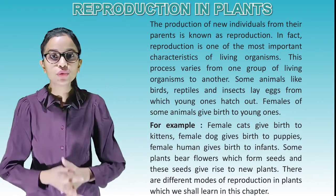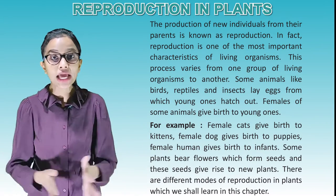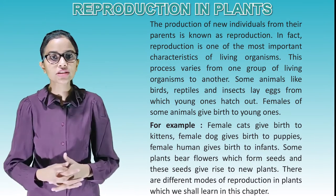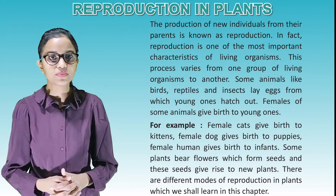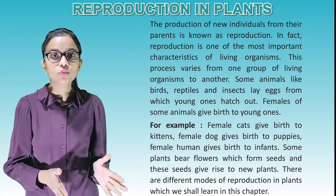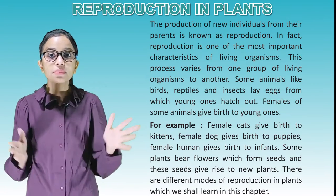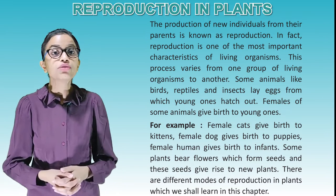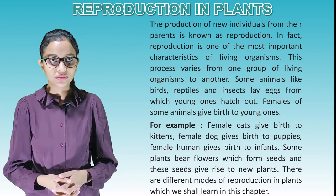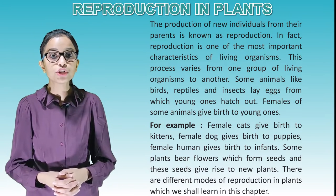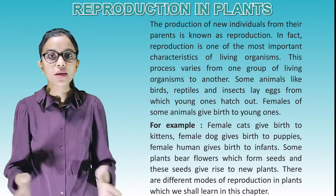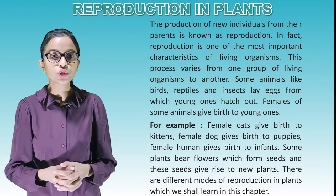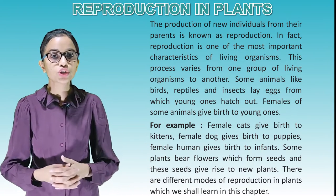The production of new individuals from their parents is known as Reproduction. Reproduction is one of the most important characteristics of living organisms. This process varies from one group of living organisms to another. Some animals like birds, reptiles and insects lay eggs from which young ones hatch out. Females of some animals give birth to young ones — for example, female cat gives birth to kittens, female dog gives birth to puppies, and female humans give birth to infants.